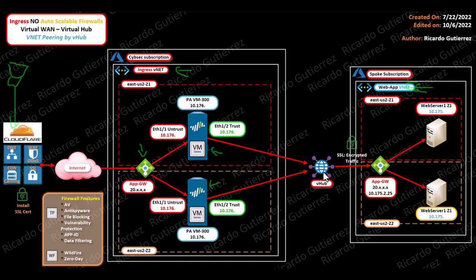Once it hits the virtual hub, the virtual hub sends the packet to the internal Application Gateway. If you notice, the firewalls are built in Zone 1 and Zone 2. In Azure, you build the resource in a zone — you can also specify the zones where you want to build the Application Gateways and load balancers.